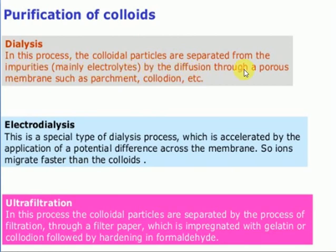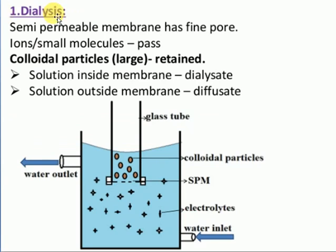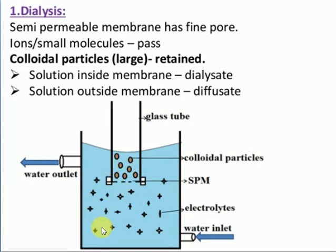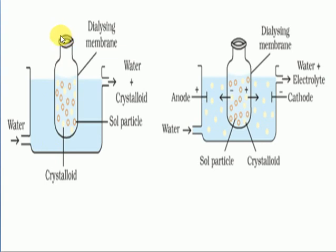In the dialysis method, colloidal particles are separated from impurities — mainly electrolytes — by diffusing through a porous or semipermeable membrane. I take a cell with a semipermeable membrane that allows only one kind of particle to pass. Impurities are small in size; colloidal particles are large. Only the impurities pass outside through the membrane while colloidal particles remain inside. When placed in water, electrolytes diffuse through the membrane but colloidal particles remain behind.